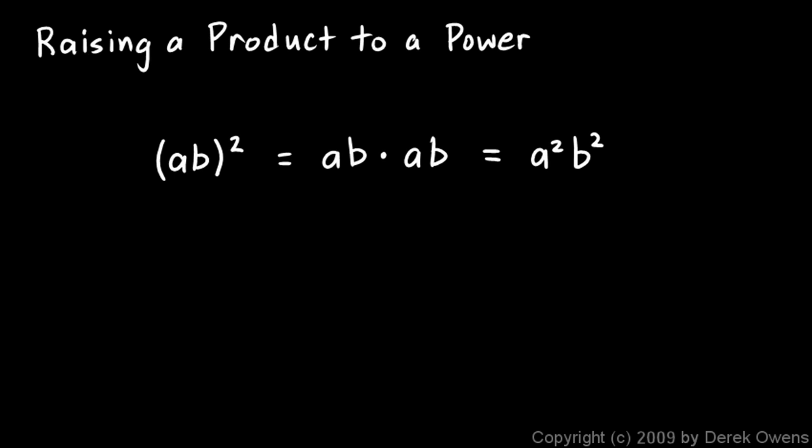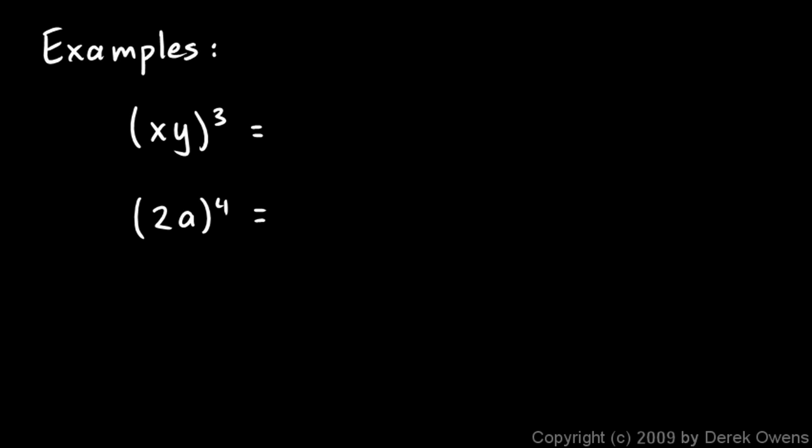Let's look at a couple of additional examples here. xy cubed. Well, if it's xy that's getting cubed, that's going to be xy times xy times xy. And you should be able to see that that will be x to the power of 3 times y to the power of 3. And again, notice this product xy was raised to a power of 3, and both the x and the y end up getting a power of 3.